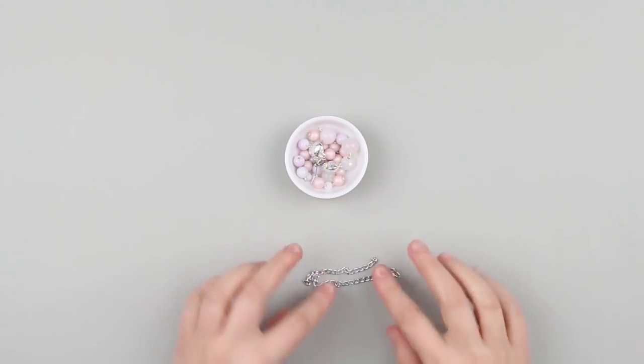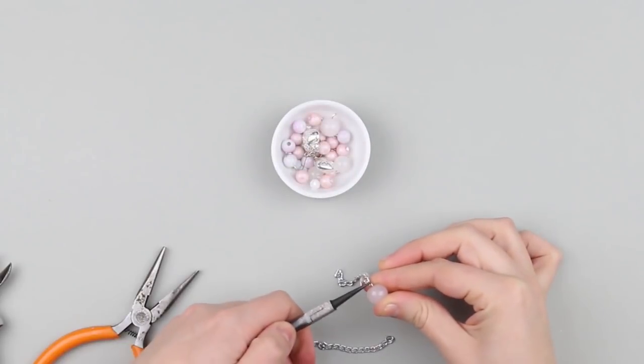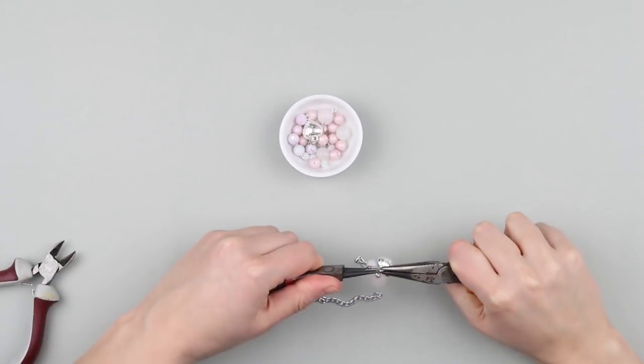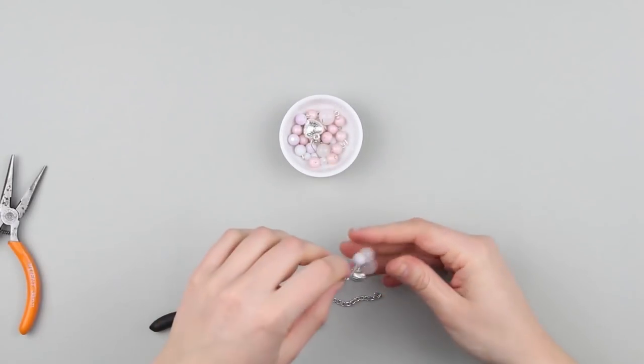Take a small piece of chain. It will be the base of an earring. Start collecting the earrings. Open a loop and attach a bead. Add a heart-shaped bead at the end. Put the beads on the chain at equal intervals.